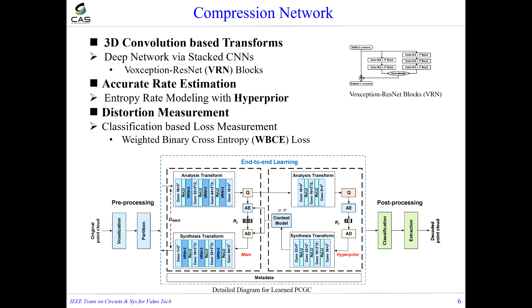Finally, the compression network is trained end-to-end using a classification-based loss. Because the occupied voxels are very sparse, we apply a weighted cross-entropy loss for training.